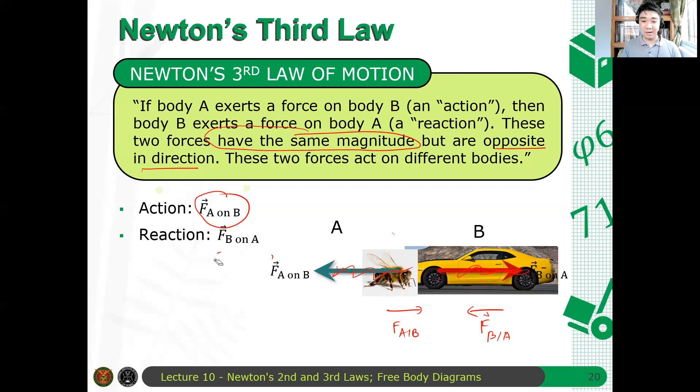Again, F_A on B and F_B on A, they have the same amount of force. They have the same magnitude, the same length. But they act opposite on each other. They have different directions or opposite directions. And we will see that F_A on B is just the negative of F_B on A. So this is what Newton's third law is saying. They have the same force magnitude but acting on opposite directions.